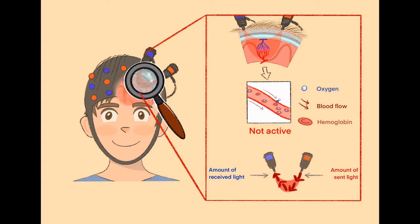Therefore, less light than the red sensors did send into your head reaches the blue sensors. Based on the difference between how much light is sent by the red sensors and received by the blue sensors, brain researchers can calculate how much oxygen a certain brain region has used.